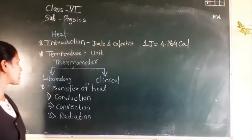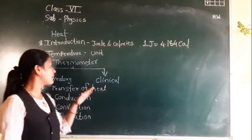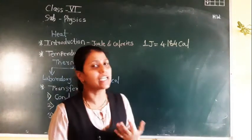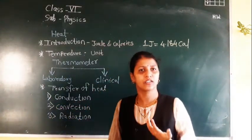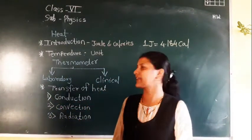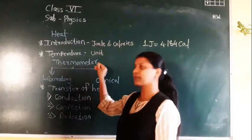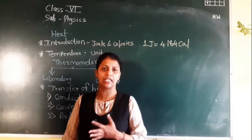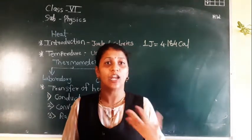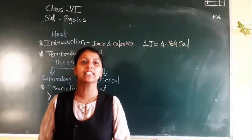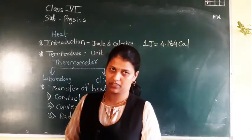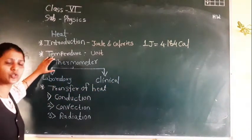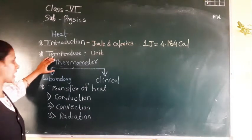There are two types of thermometer. To measure the temperature we need an instrument called a thermometer. To measure heat, the instrument used is a calorimeter. To measure temperature we need a thermometer.